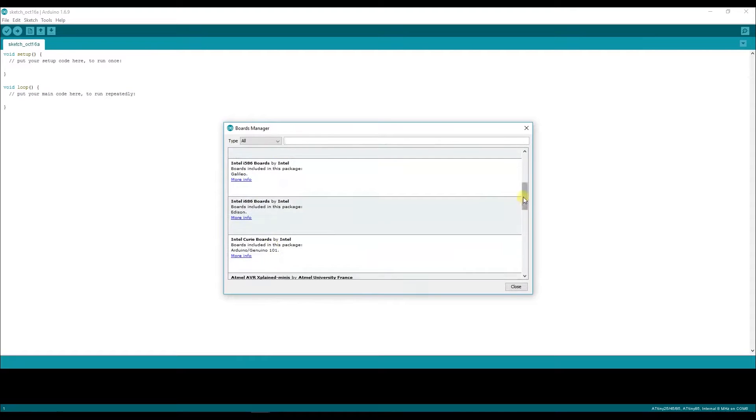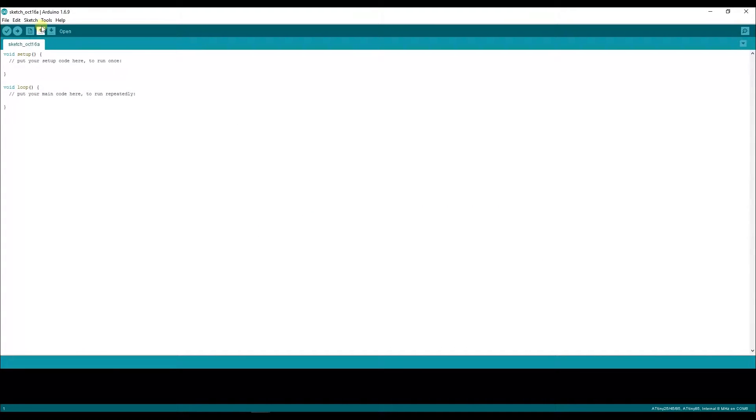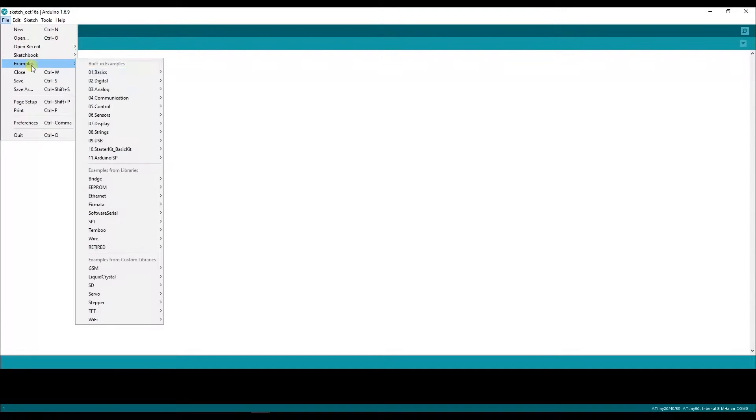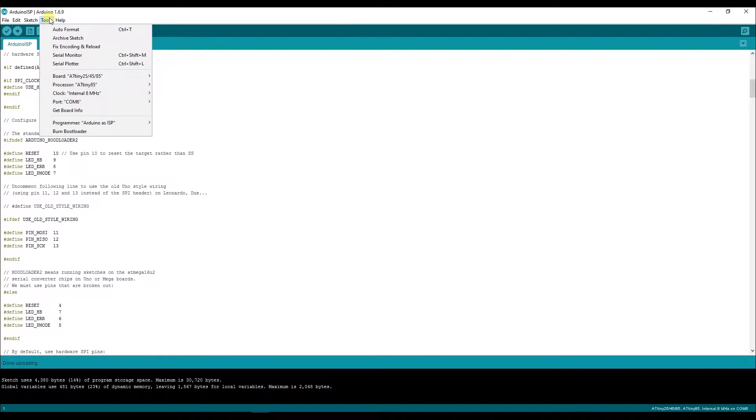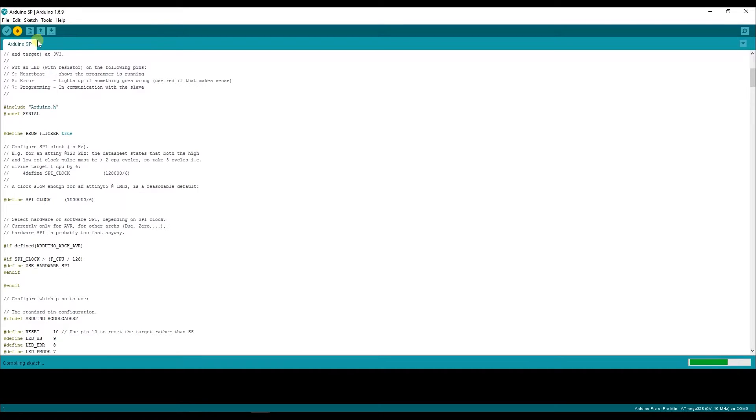Now, in the boards manager, you should see some ATtiny board, click it there and install. Once you're done, you should see some new boards on your Arduino boards. Now, open the Arduino ISP sketch on the example, choose your Arduino board, upload it.